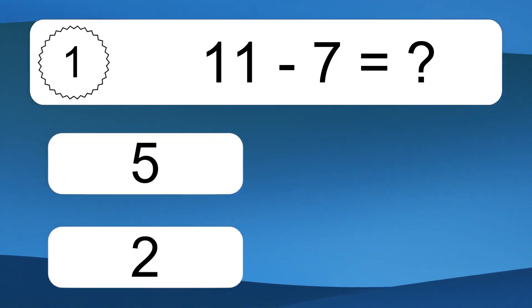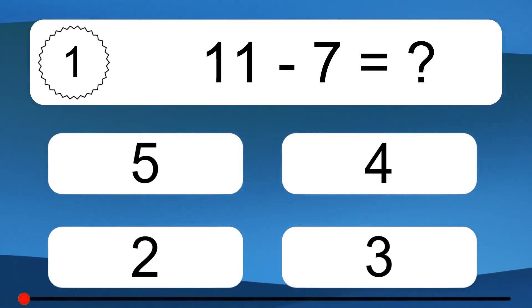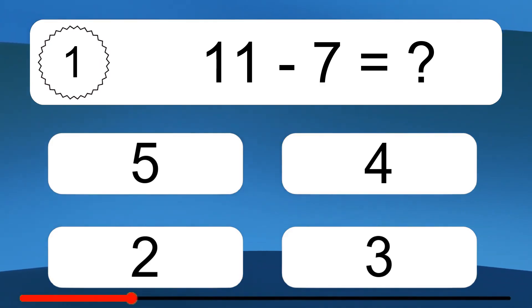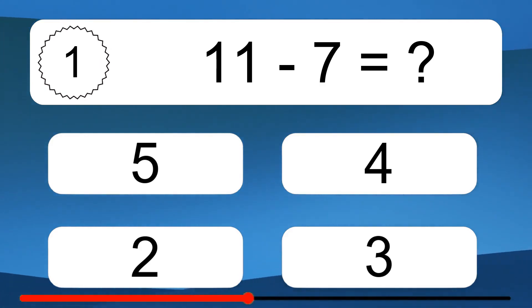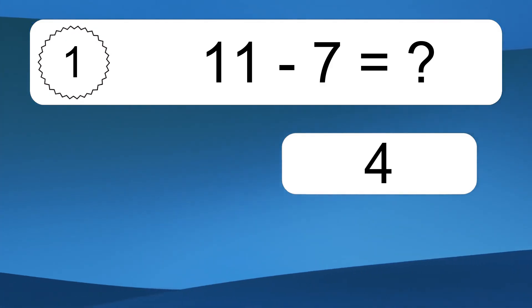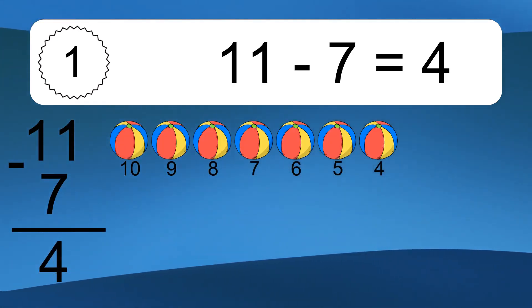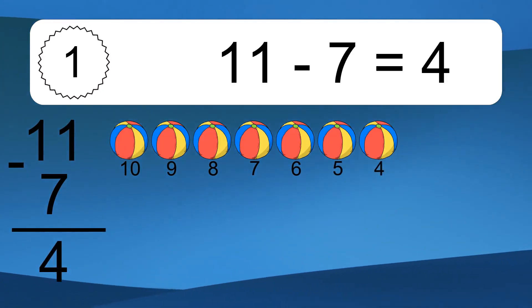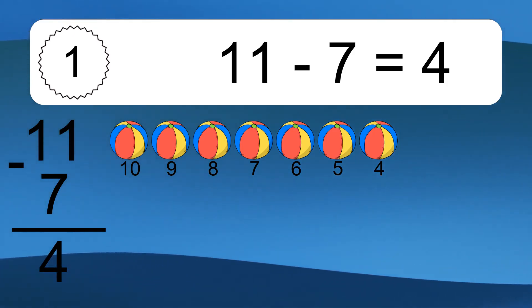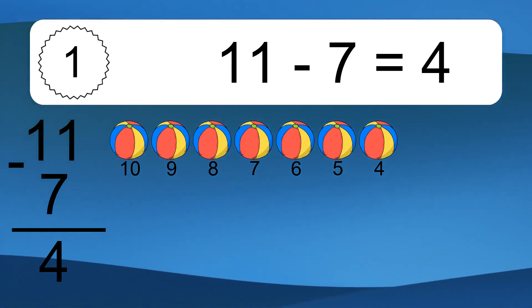11 minus 7 equals what? 11 minus 7 equals 4. Let's count it: 10, 9, 8, 7, 6, 5, 4.